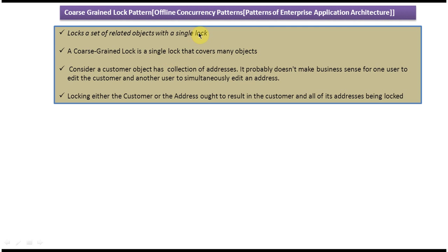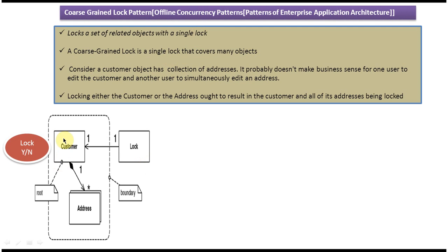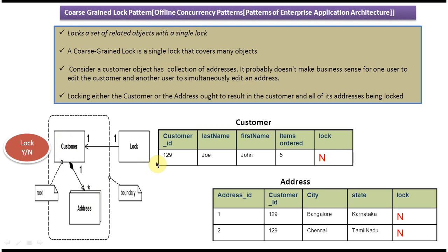Here you can see the customer example. Customer is the root and the customer has a number of addresses. Looking at the table structure: the customer table has five columns — customer ID, last name, first name, item ordered, and lock. The first row has join formation and initially the lock is N.